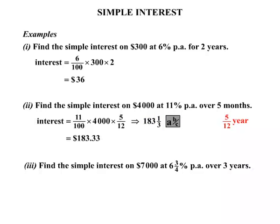Our third example. Find the simple interest on $7,000 at 6 and 3 quarter percent per annum over 3 years. So the interest equals. Now 6 and 3 quarters percent means 6 and 3 quarters over 100. We multiply by the 7,000.